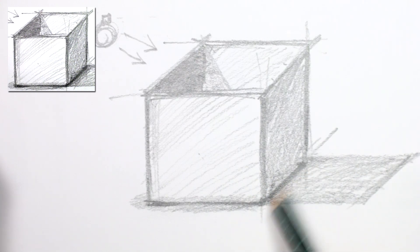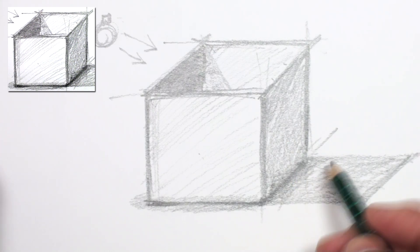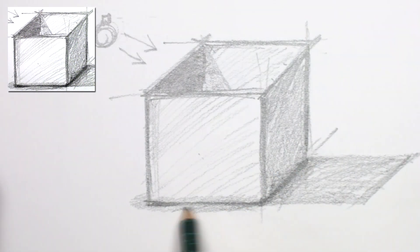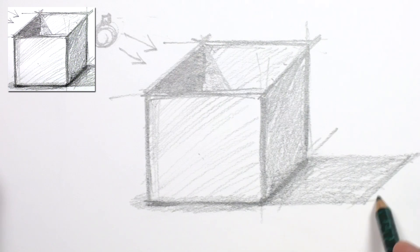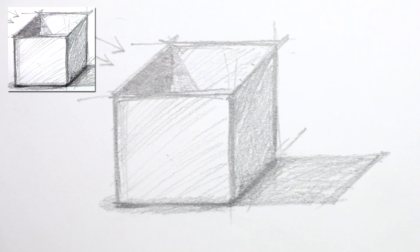And then remember with the ambient occlusion, it's going to be a little darker right there where the box touches the floor. So there you have a 3D pencil box.